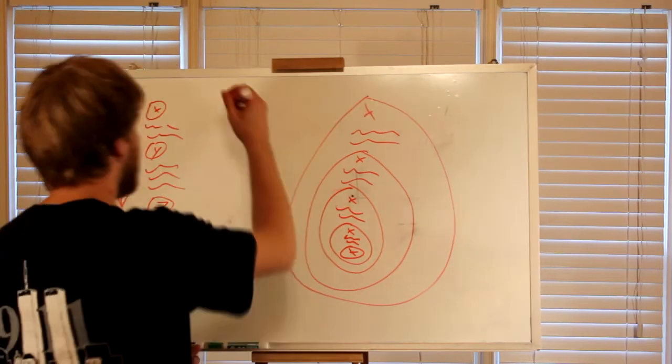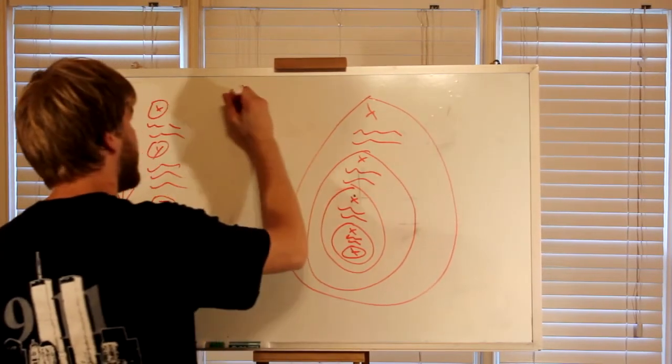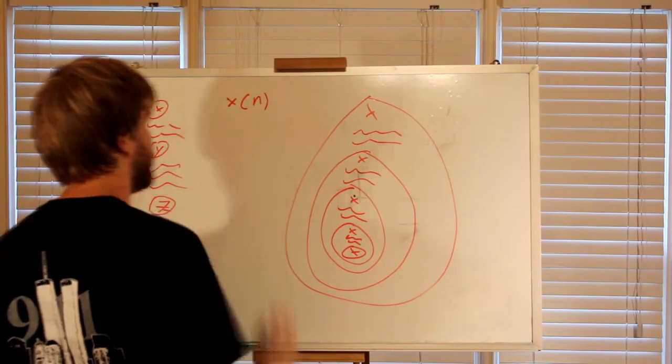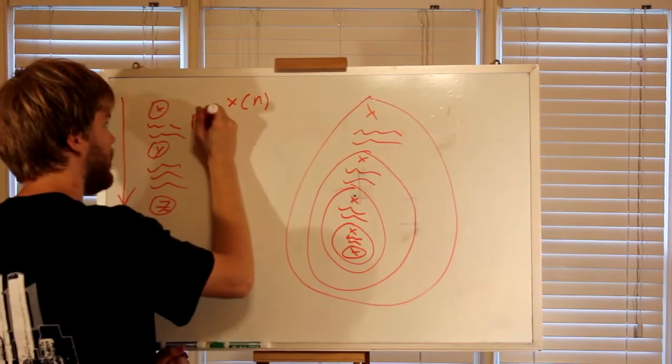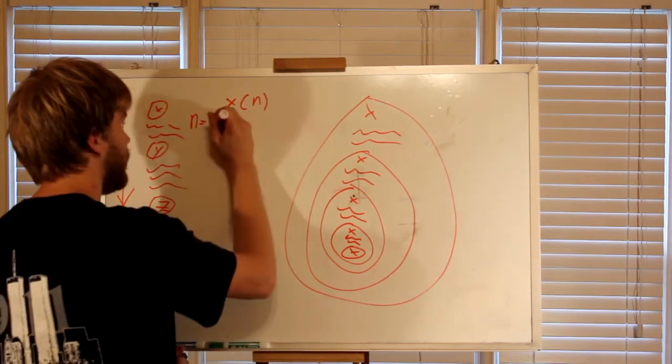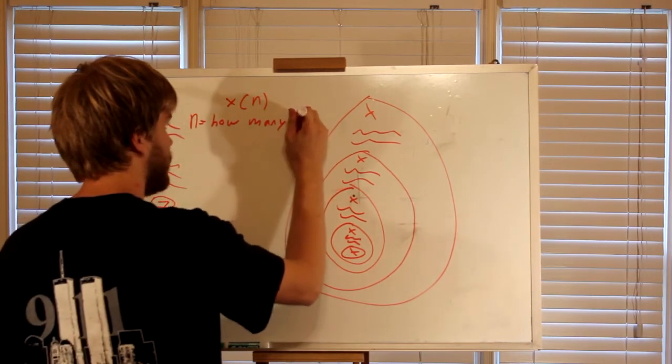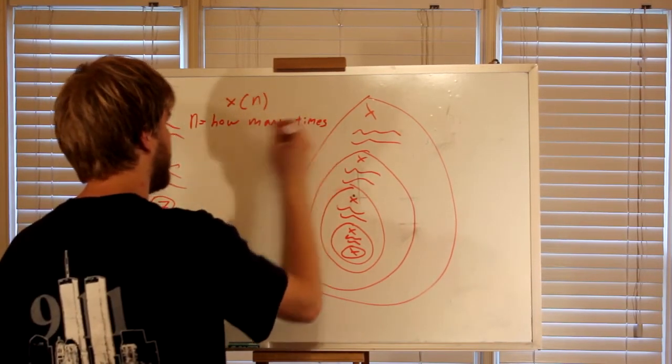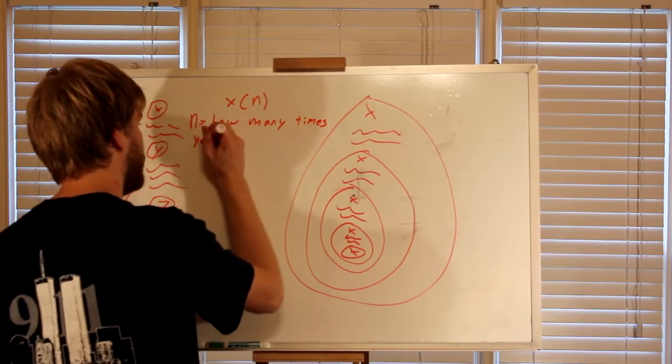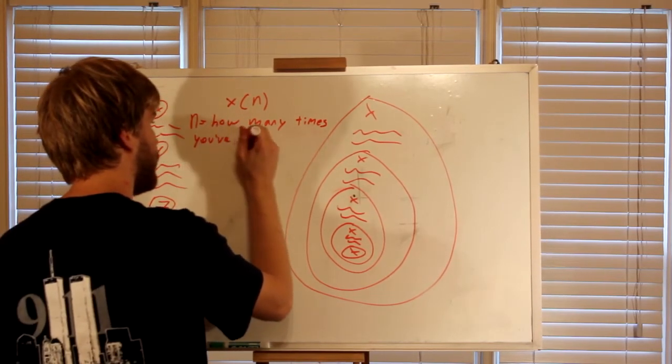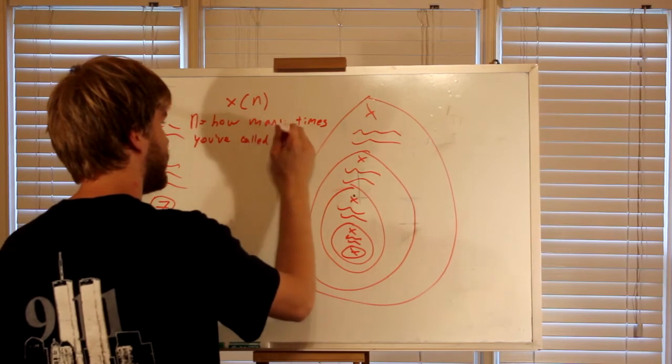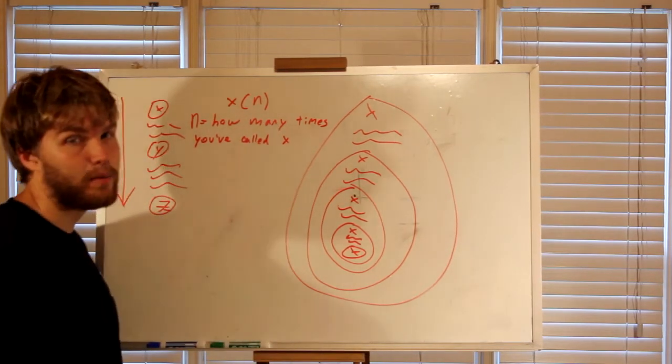So, in this case we're going to say, we have method X with parameter N, and where N is how many times you've called X. N is how many times you've called X.